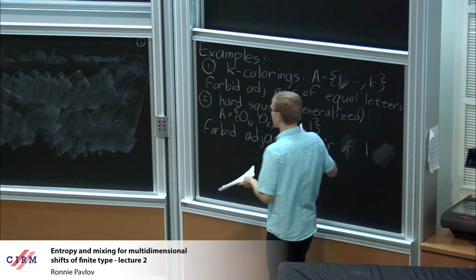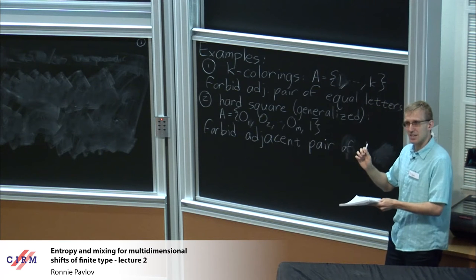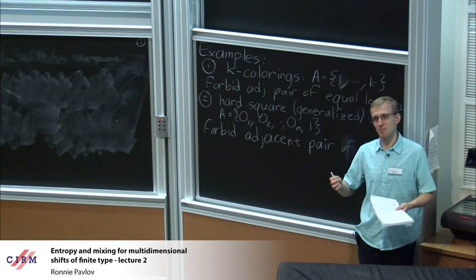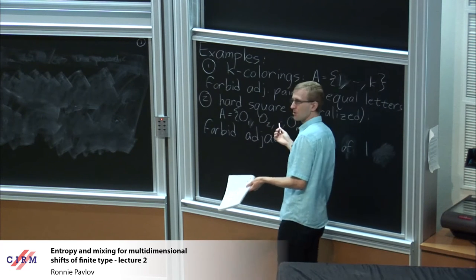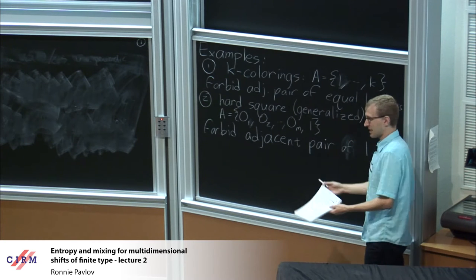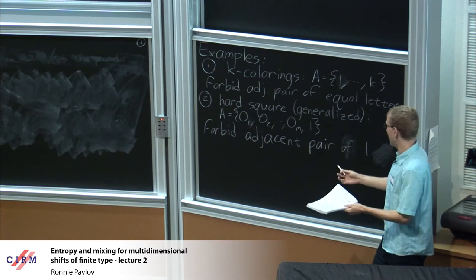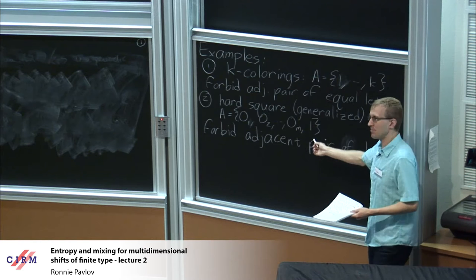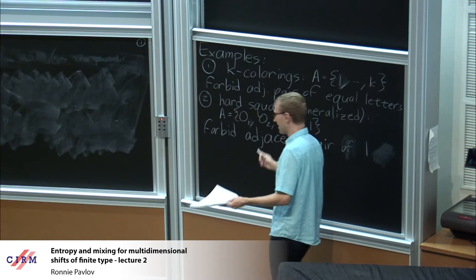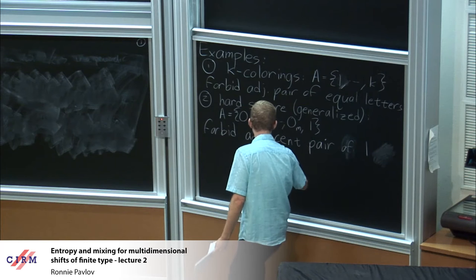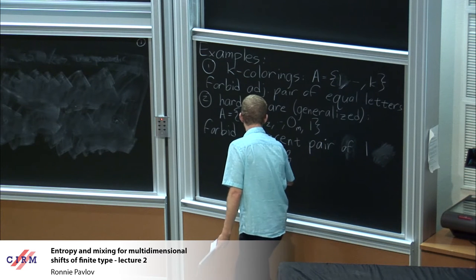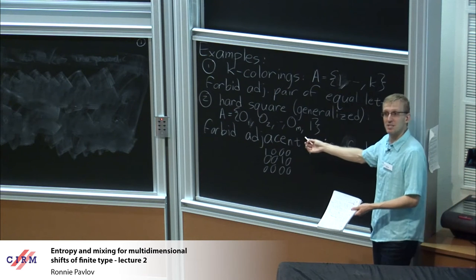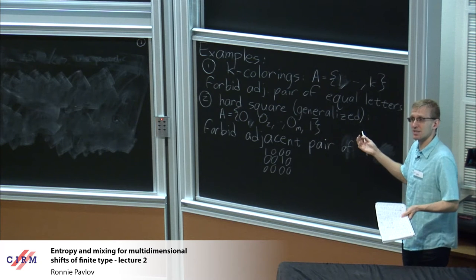For the second example, this is the hard square model I defined last time, but I made a very tiny change. I'm going to allow the possibility that you have a lot of copies of the 0 symbol — maybe 0 sub 1, 0 sub 2 up through 0 sub m. But still, the only restriction in the entire shift is that you can't put 1s next to each other.